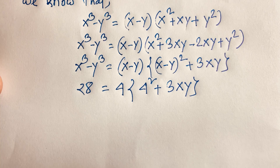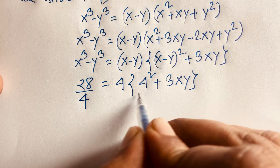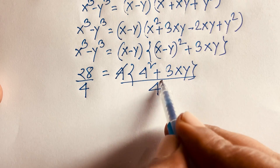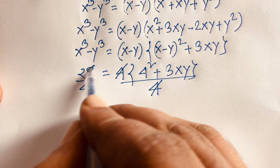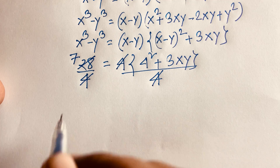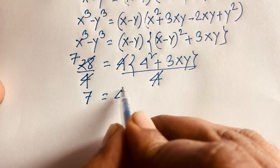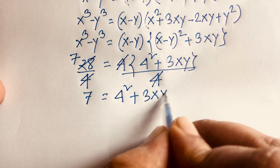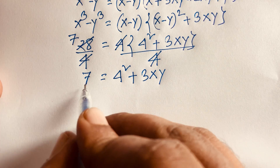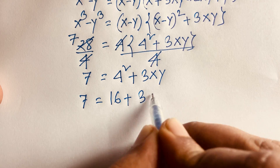If I divide both sides by 4, the 4s cancel, and 28 divided by 4 gives 7. So this equation becomes 7 equals 4 squared plus 3xy, which means 7 equals 16 plus 3xy.